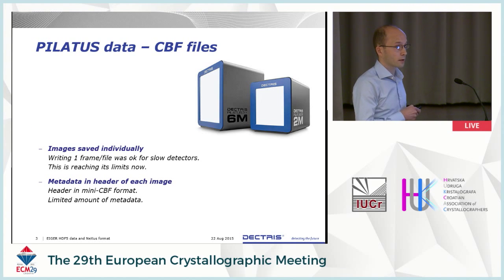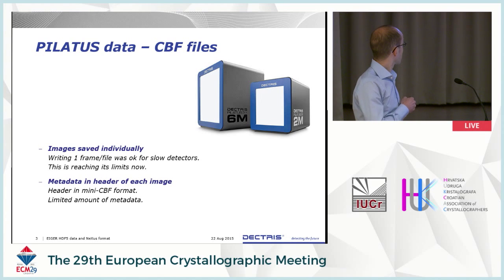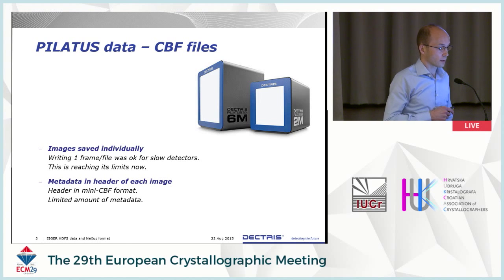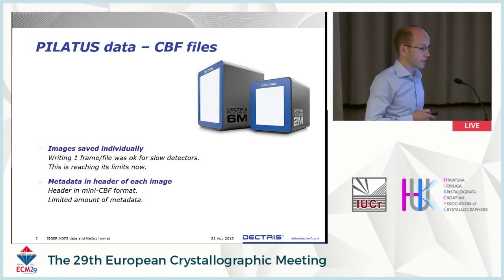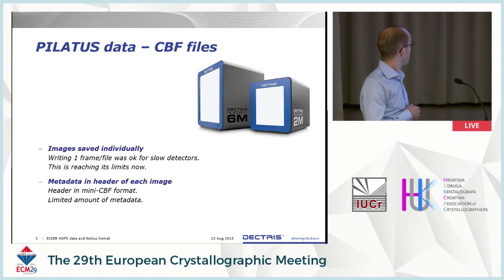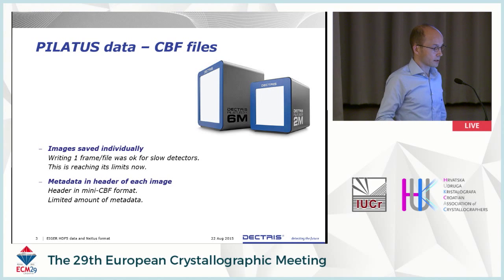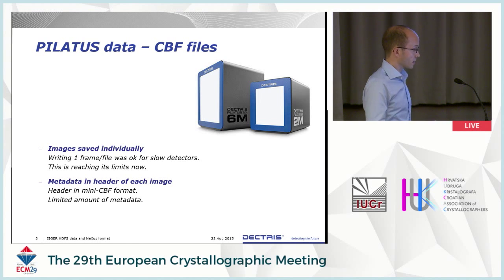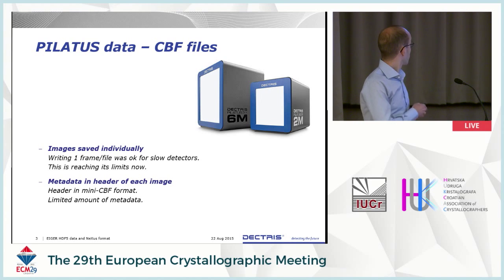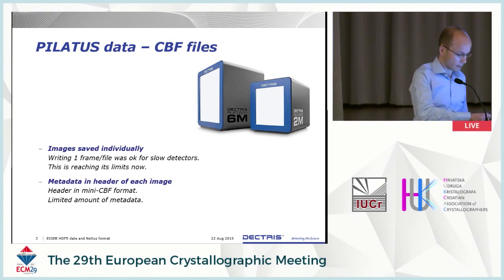Some of you in the macromolecular crystallography community might be familiar with the Pilatus detectors and with how images are saved, or used to be saved. We have one frame, one image, one file per image, and the metadata is in plain text in the header — so there's a binary image and the header contains the metadata. That was okay with the slow detectors, but it's reaching its limits.